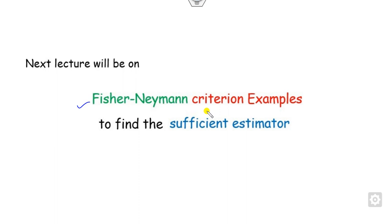In the next class we will see more examples related to the Fisher-Neyman criteria and how to find sufficient estimators using that approach. Follow the link for more updated videos. Best of luck, students!